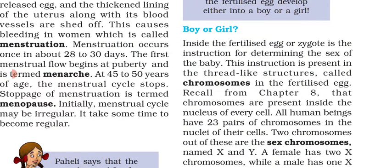First, let me tell you about chromosomes. Chromosomes are thread-like structures present in the nucleus. Inside the fertilized egg, the zygote carries the instruction for determining the sex of the baby — whichever chromosome is present in the zygote determines the baby's sex.